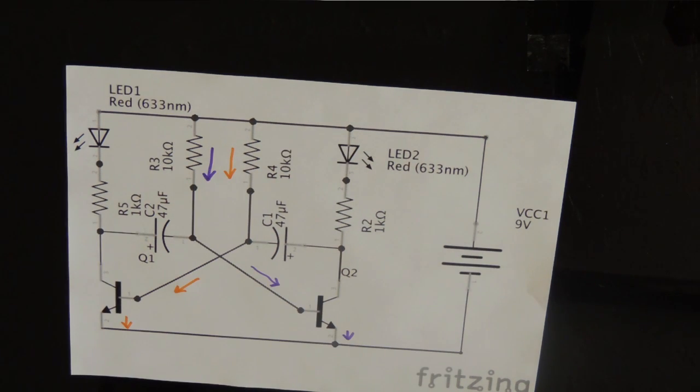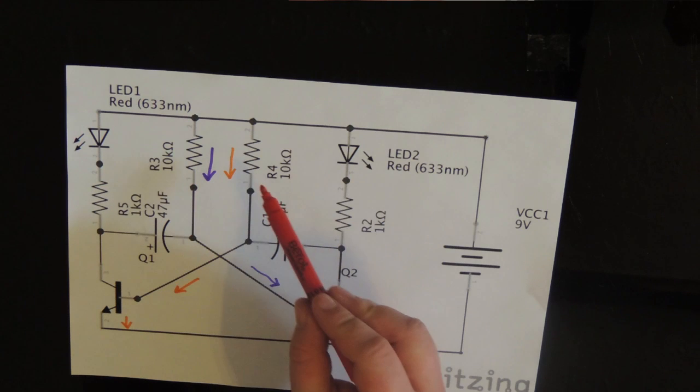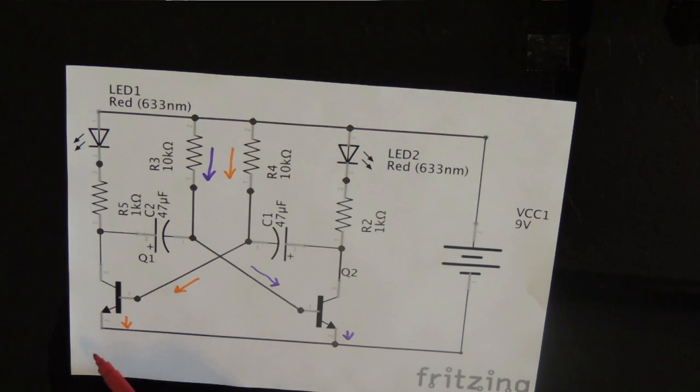When you first supply power to this circuit, current flows through R3 and R4 into the base of Q1 and Q2, which are two transistors. The voltage at each transistor's base is about 0.6V, which is one diode drop above ground.